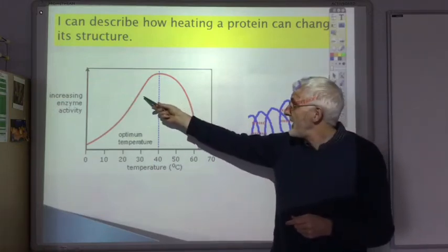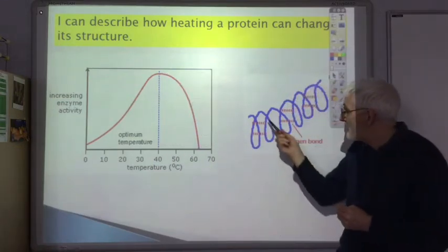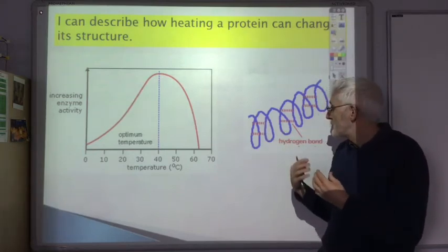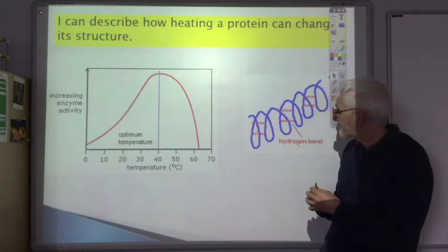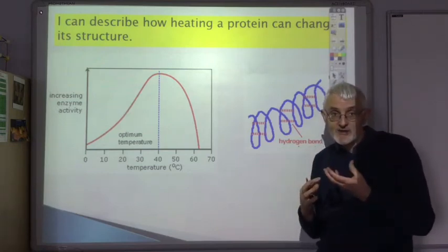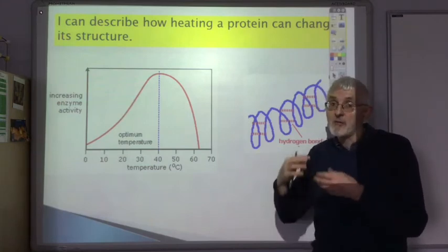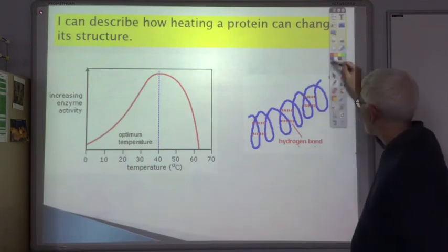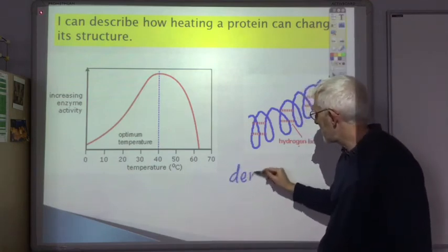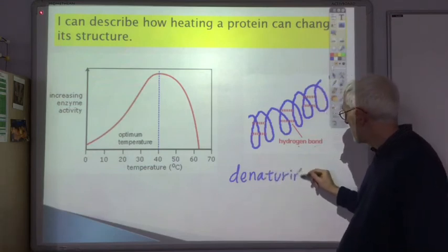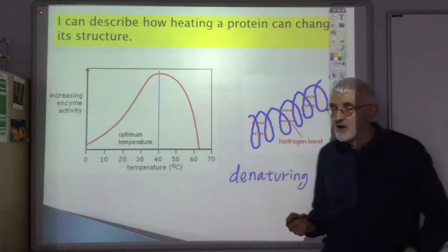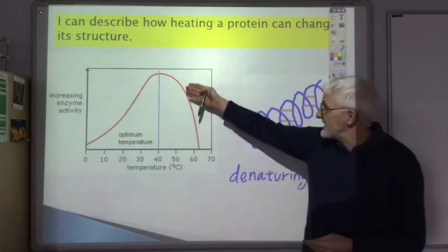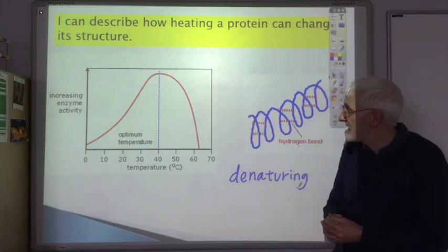If we heat up an enzyme too far, these hydrogen bonds break, so we break the forces between different parts of the protein molecule. The shape changes, and if the shape of the enzyme changes, it becomes less effective at speeding up the chemical reaction. This process of changing the shape of the protein is called denaturing — the protein gets denatured, meaning the shape changes because the hydrogen bonds are broken, making it a less and less effective catalyst.